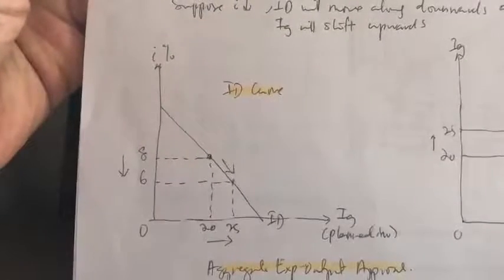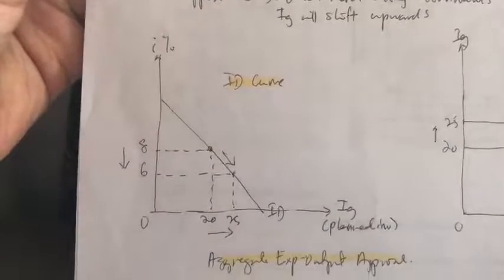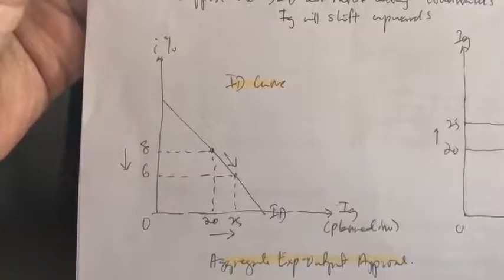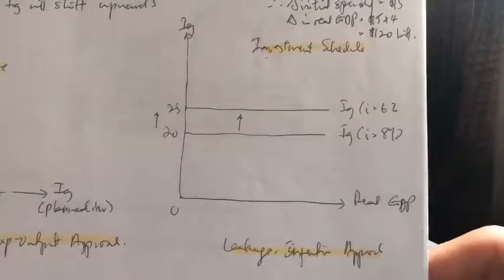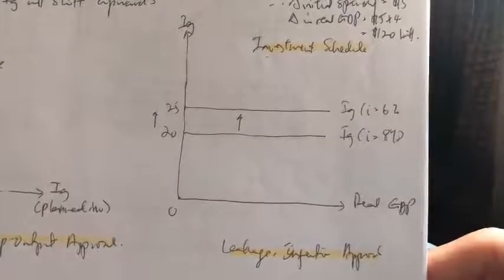Okay, so the change in the investment demand curve can be shown through the aggregate expenditure and output approach, whereas the change in the investment schedule can be shown through the leakage injection approach. Let's go and look at it one by one.